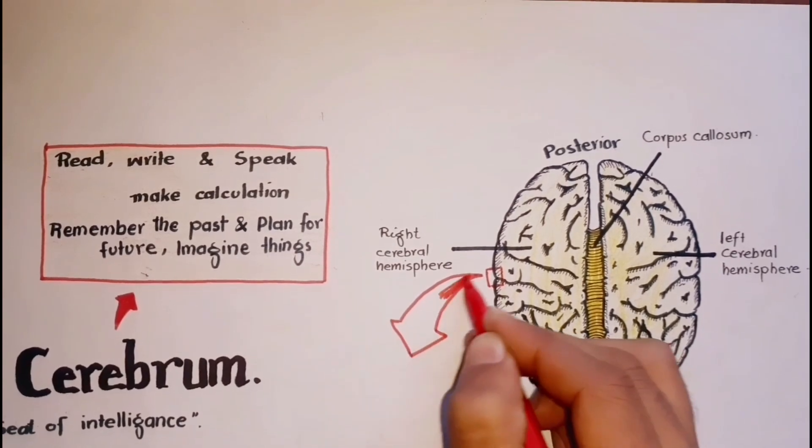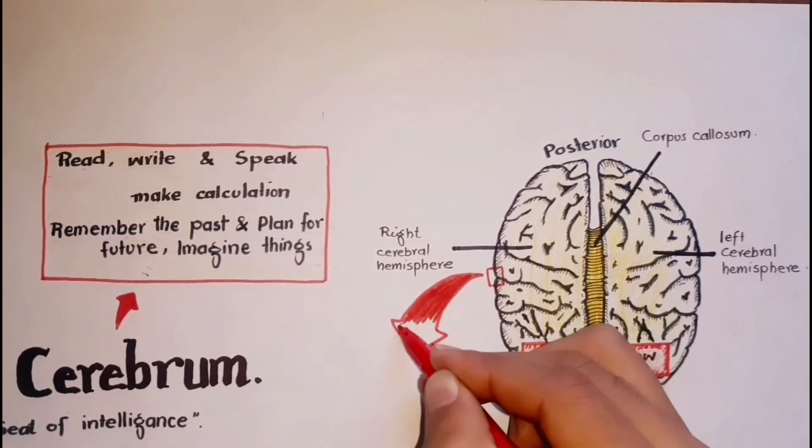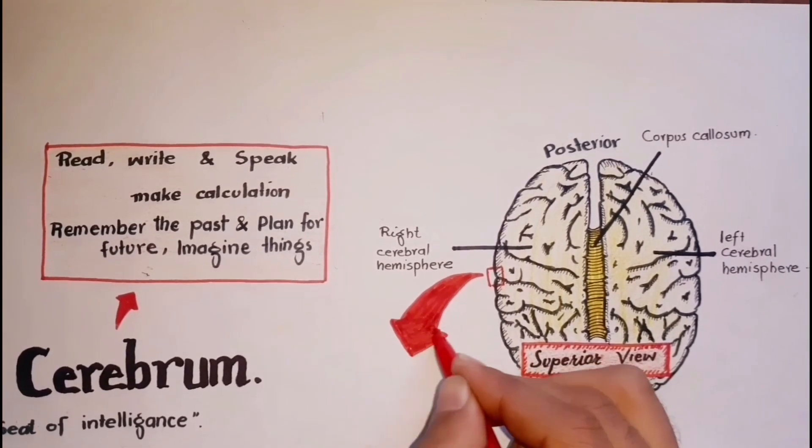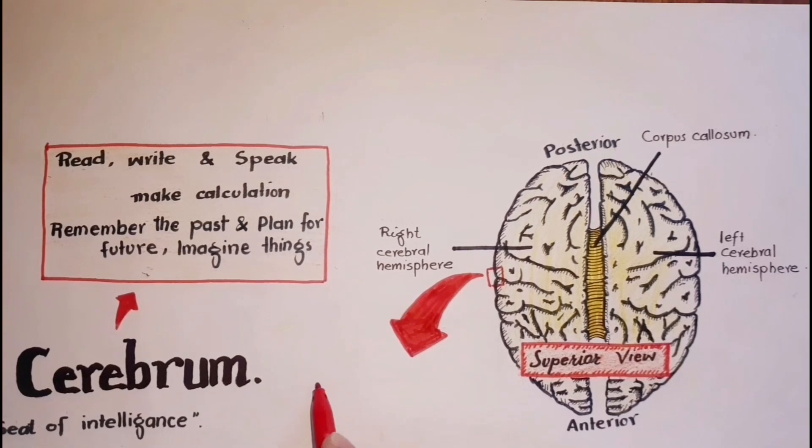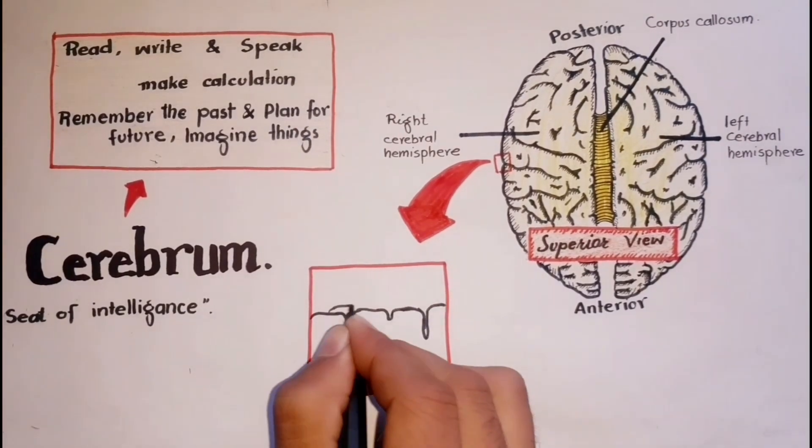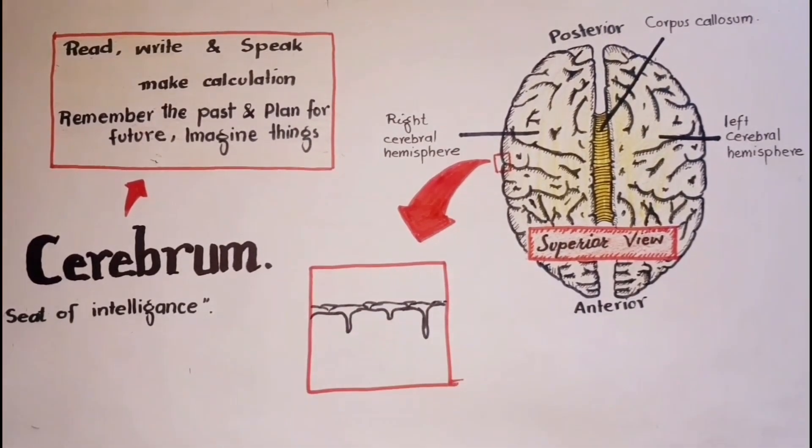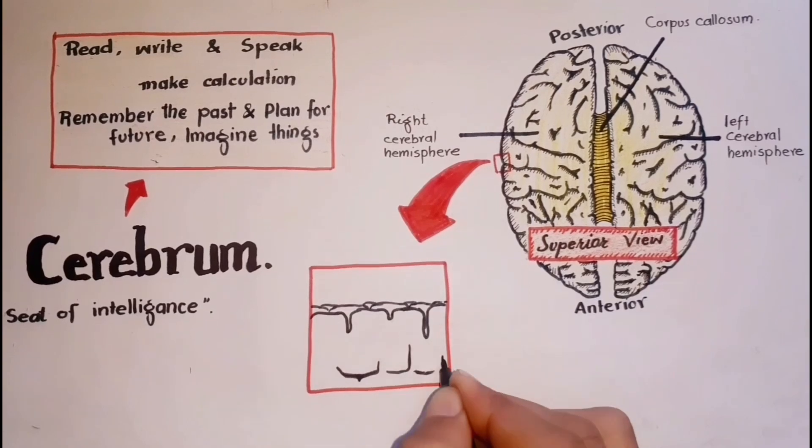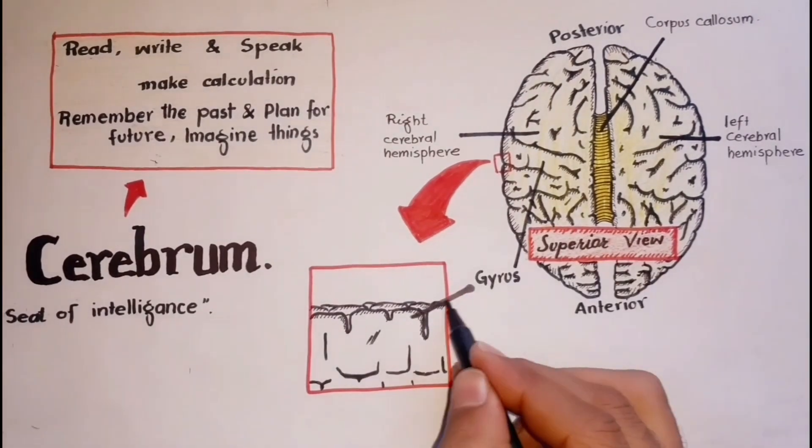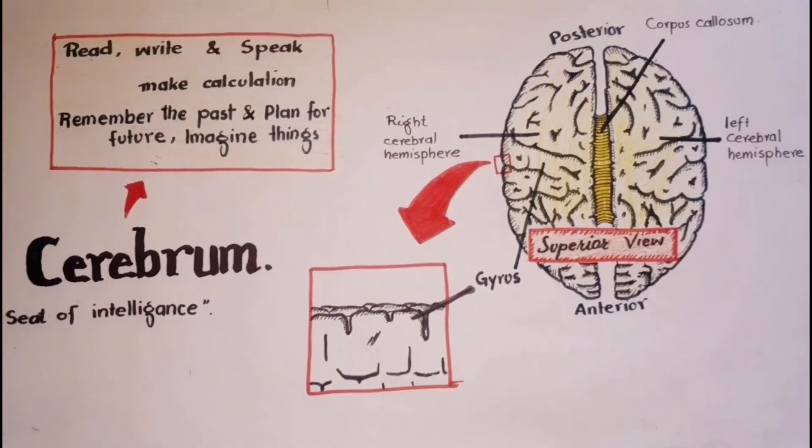The surface of the cerebrum has many raised ridges or convolutions called gyri. Here we have zoomed into a surface portion of the brain. A single ridge or convolution is called a gyrus. These convolutions greatly increase the surface area of the cerebrum to have more cell bodies.